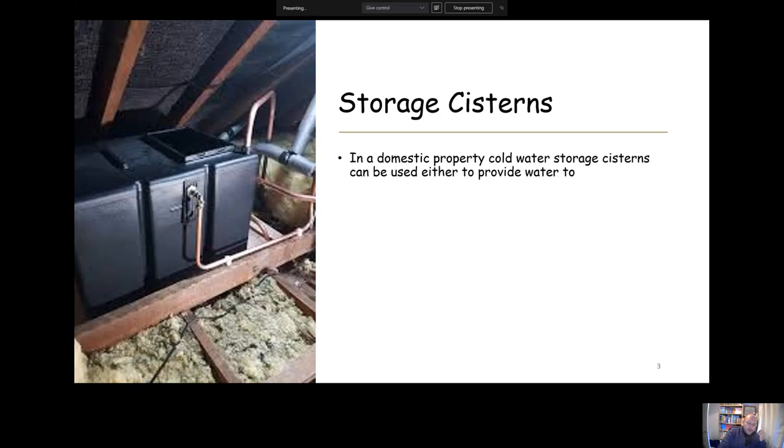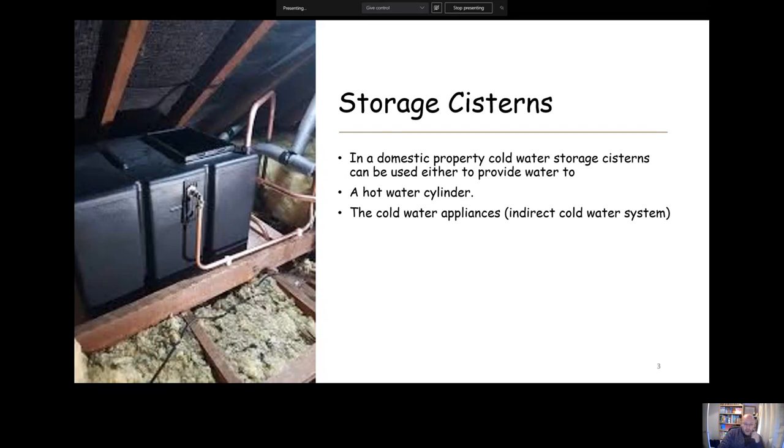In a domestic property, cold water storage systems are either used to provide water to a hot water cylinder or cold water appliances, and sometimes both. If it's feeding water to cold water appliances, it would be an indirect cold water system like we discussed in the last session.